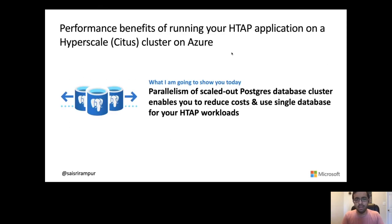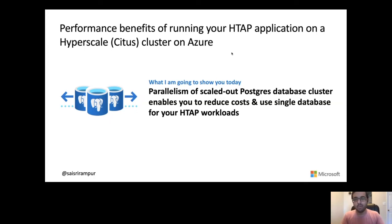To solve this problem, you have Hyperscale Citus at the rescue, where you can have both transactions and analytics in the same store. The reason you're able to run transactions is because under the covers Hyperscale Citus is all built on the PostgreSQL core, which has a rich story for relational transactional workloads. For the analytics part, you have parallelism, where you have the ability to parallelize your queries across multiple machines, scale compute, and get linear performance benefits. This would really help you reduce cost both from a maintenance and a hardware perspective.